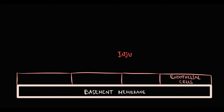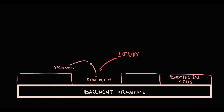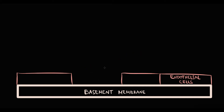If damage to endothelial cells occurs, endothelin that was contained inside the endothelial cell will be released into the bloodstream and will cause transient vasoconstriction. After the constriction, the organism has to immediately cover and repair the damaged area. In order to do this, endothelial cells release from Weibel-Palade bodies a huge amount of von Willebrand factor.